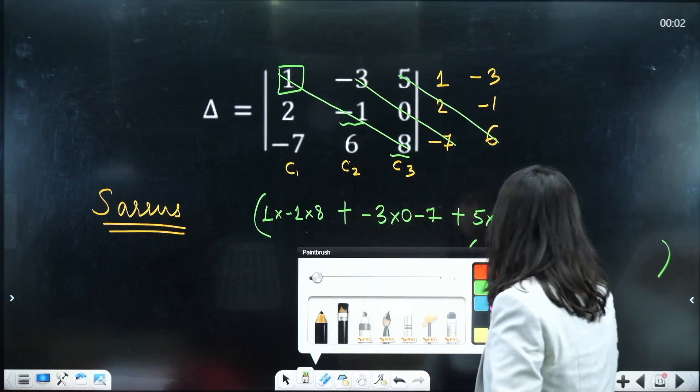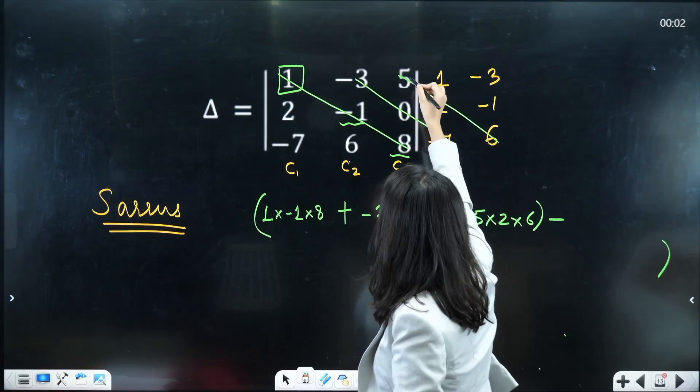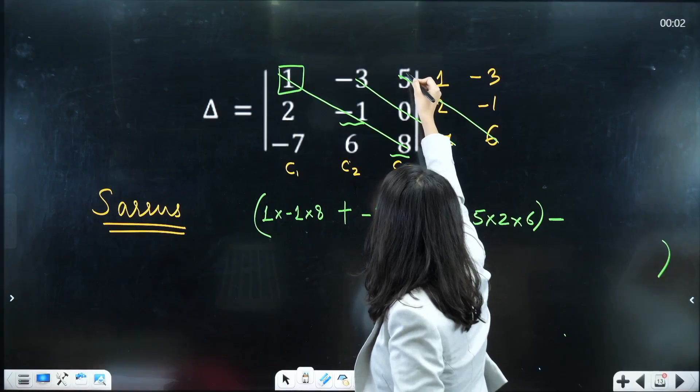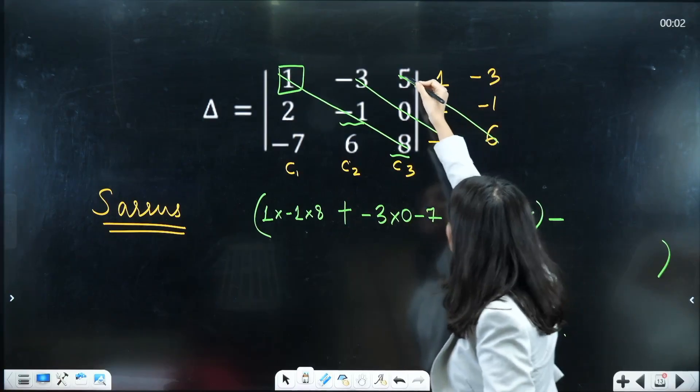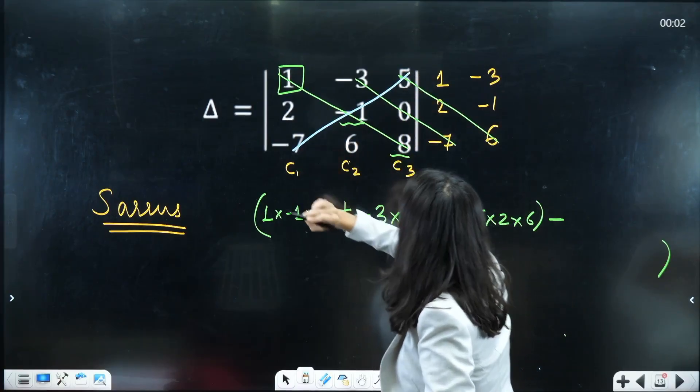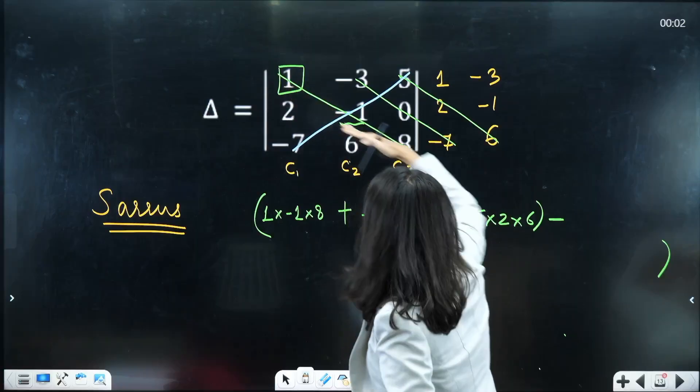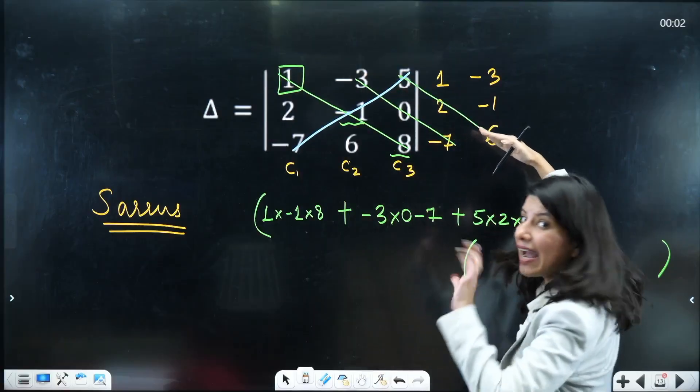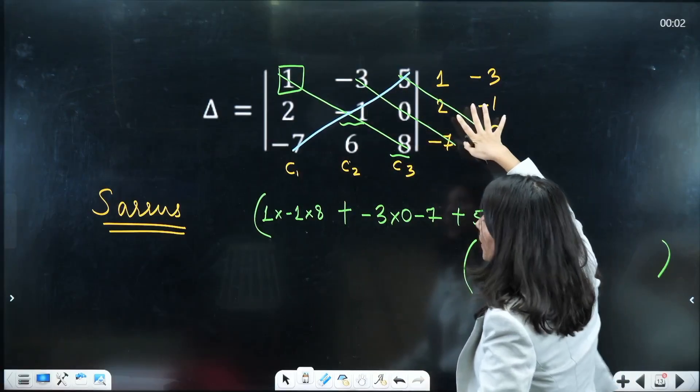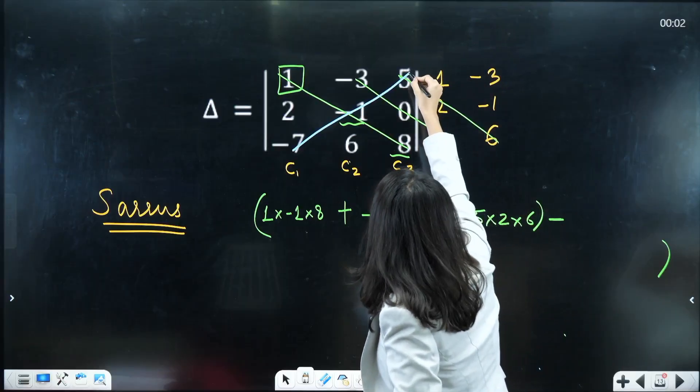So what you need to do is now you have to start with this diagonal. Start with this diagonal, 5, minus 1 and minus 7. So start with this diagonal, this diagonal, this diagonal and then switch over once you are done with this, then start with this.